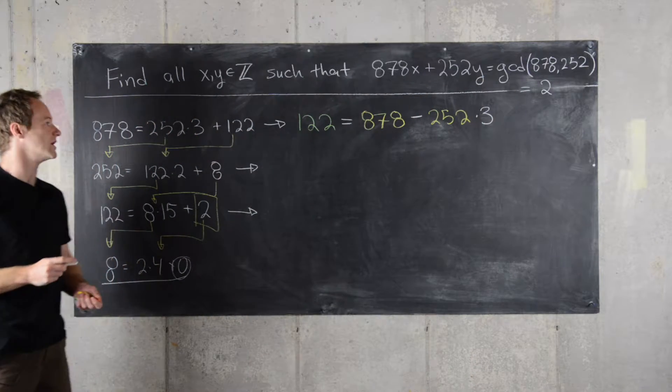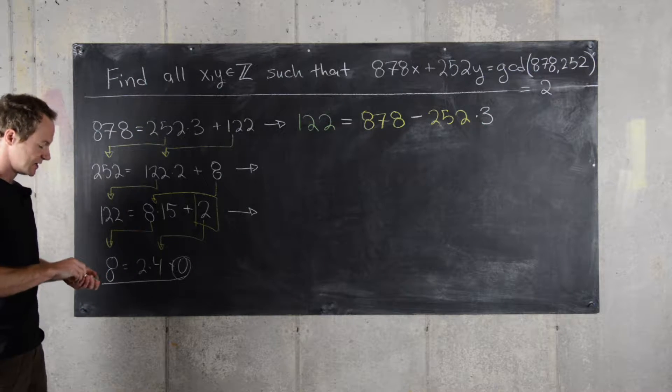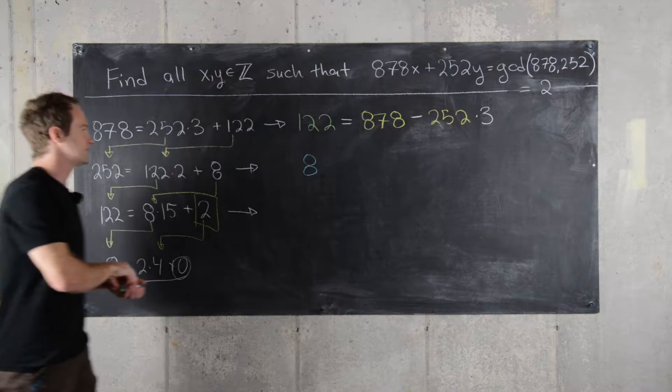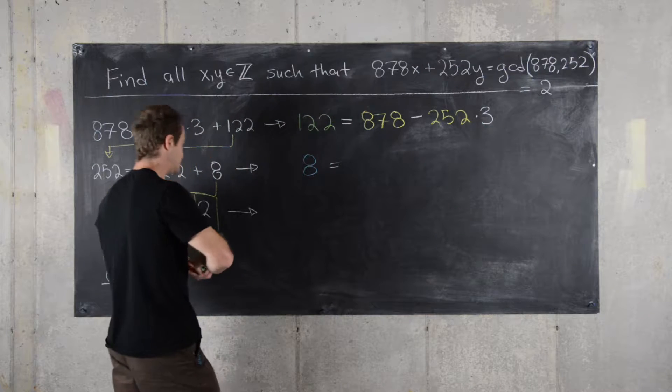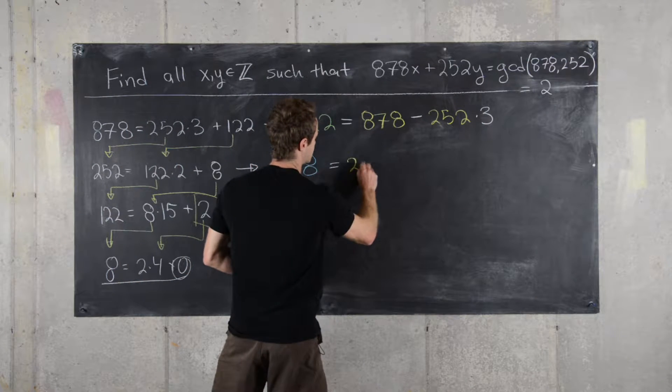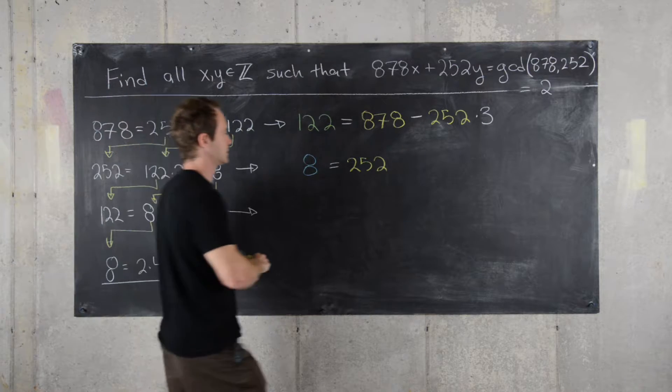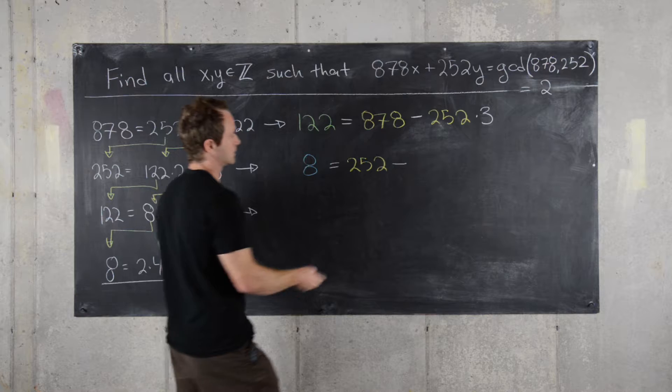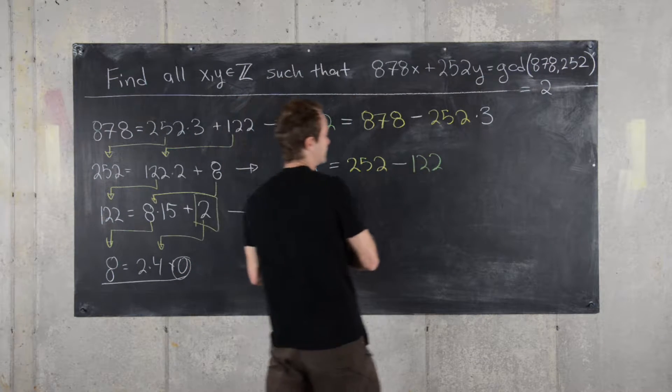So now we've written 122 like that, and then we'll do the same thing for 8. So let's write 8. We'll use blue for 8. And now this is equal to 252 minus 122 times 2.